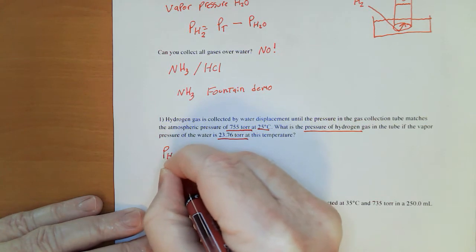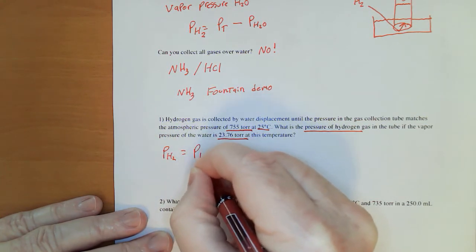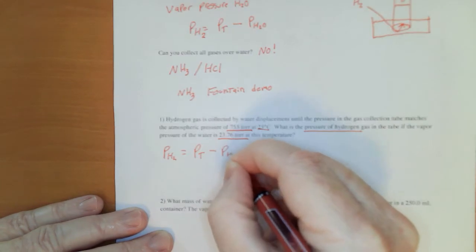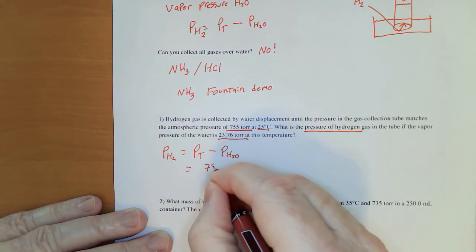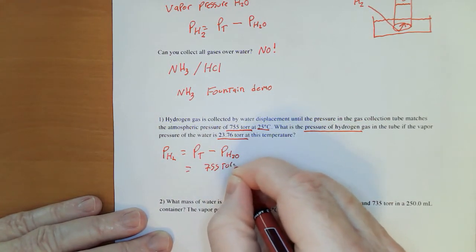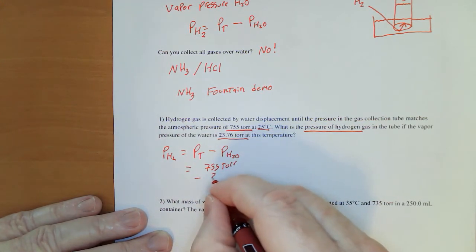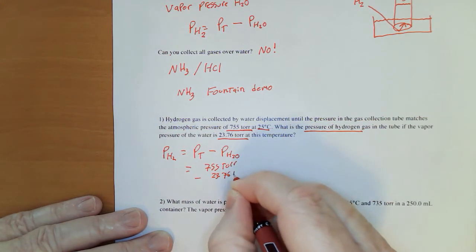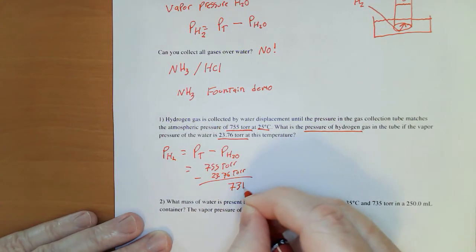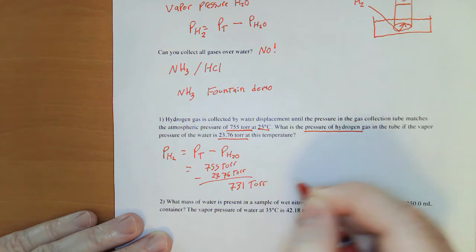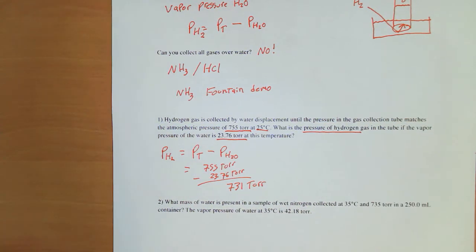So the pressure of the hydrogen would equal the total pressure minus the vapor pressure of the water, which will equal 755 torr minus 23.76 torr, pretty small amount. Round it off to sig figs: 731 torr. That's really all there is to it.